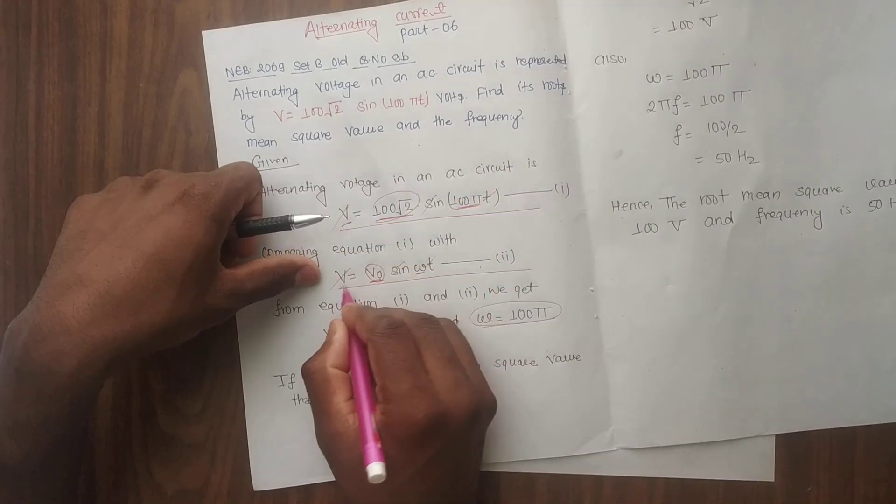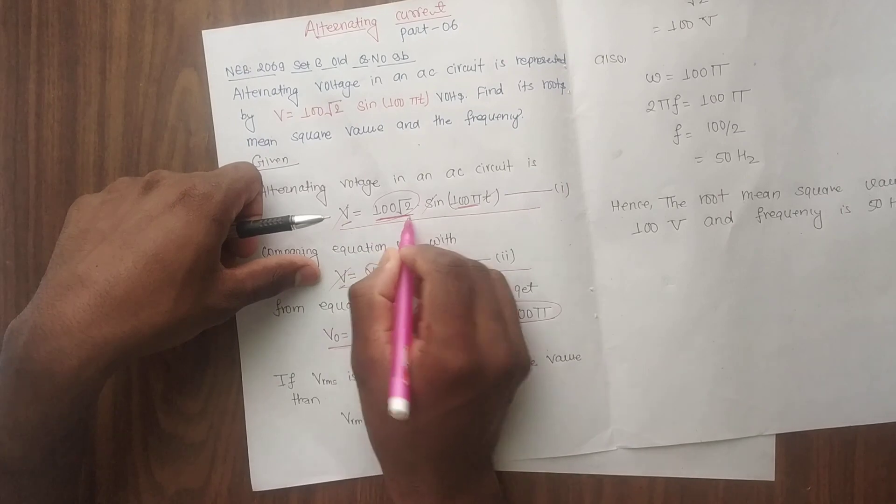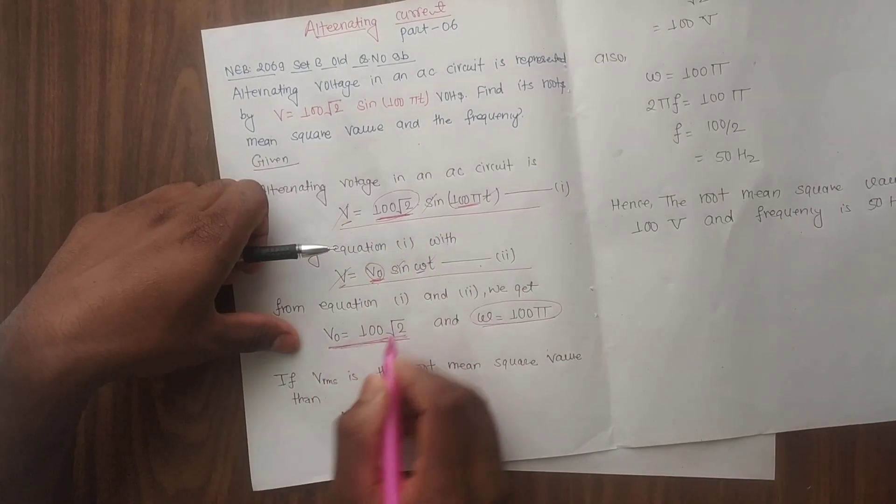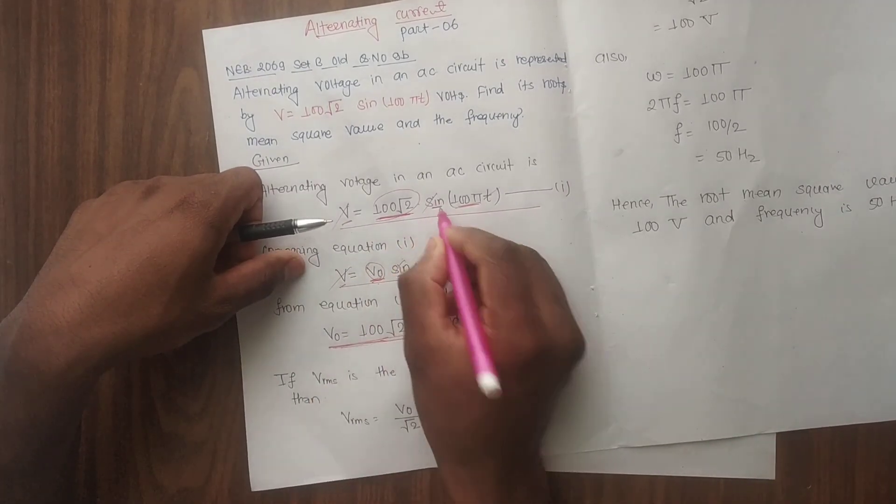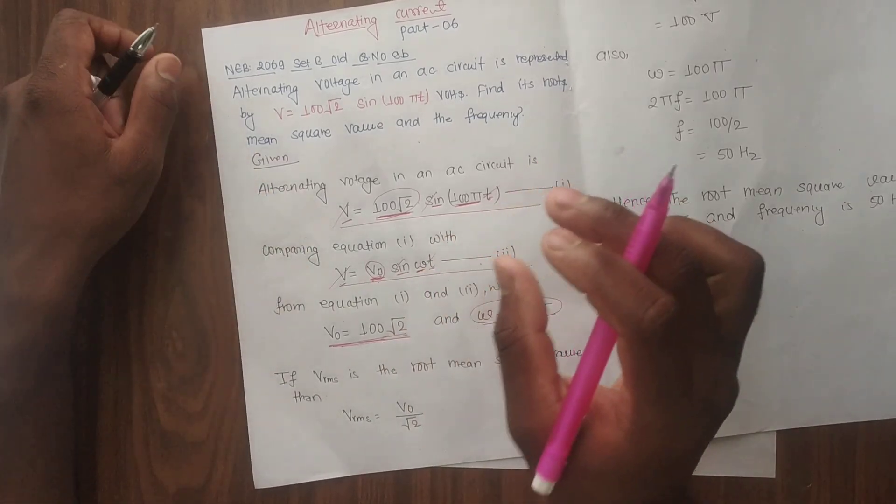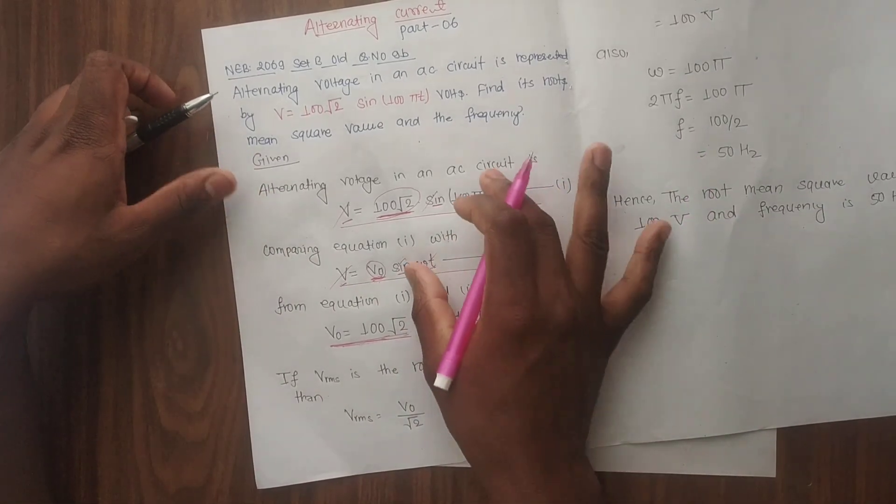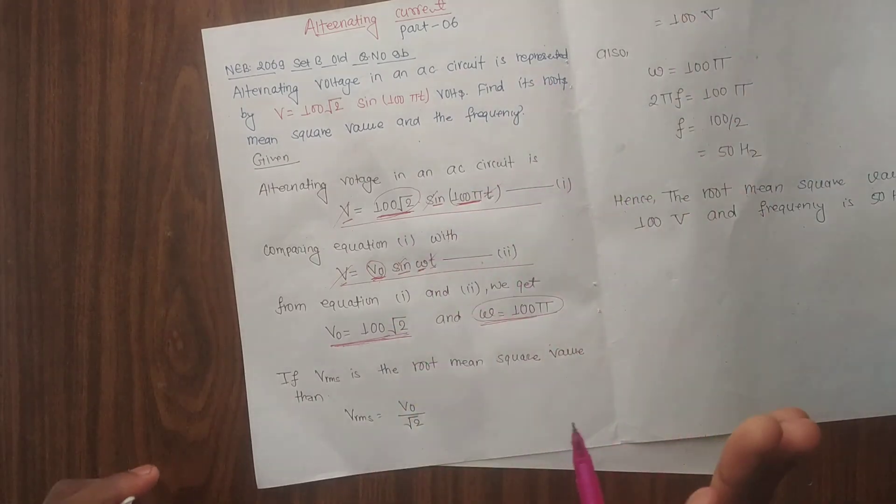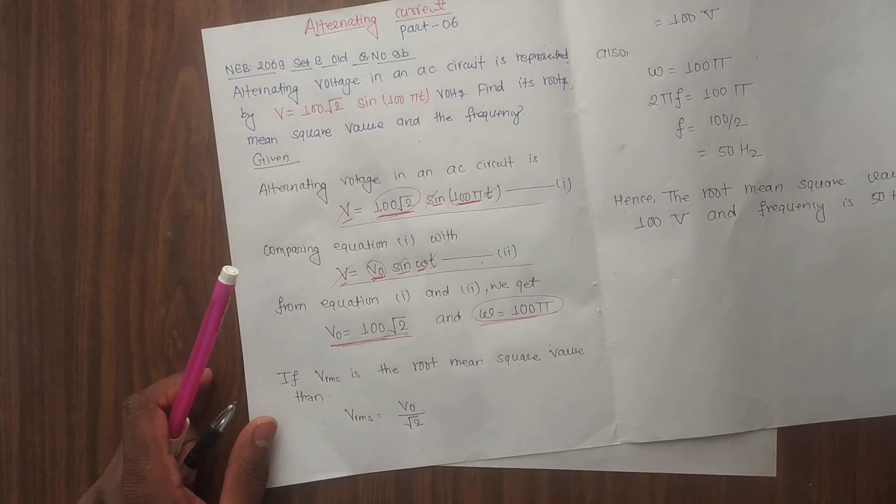This is the same here, sin and omega t. Compare this. This is the same one. Peak value is √2 times RMS, this is the formula we can remember.